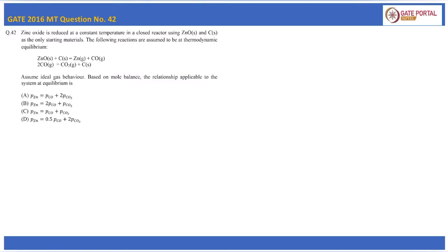Assume ideal gas behavior. Based on the mole balance, the relationship applicable to the system at equilibrium is: Option A: P_Zn = P_CO + 2·P_CO₂; Option B: P_Zn = 2·P_CO + P_CO₂; Option C: P_Zn = P_CO + P_CO₂; Option D: P_Zn = 0.5·P_CO + 2·P_CO₂. As mentioned at the start, only ZnO and carbon were present in the closed reactor.